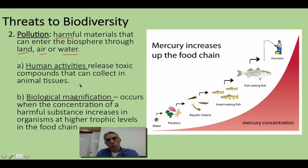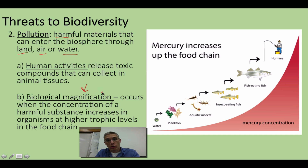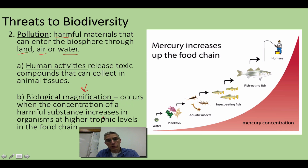When you introduce toxic compounds into the environment, they can be magnified. When you magnify something, you increase the concentration of that particular toxic substance in an organism or in organisms that may feed on that organism. We call this biological magnification, and it occurs when the concentration of a harmful substance increases in organisms at each higher trophic level in the food chain.